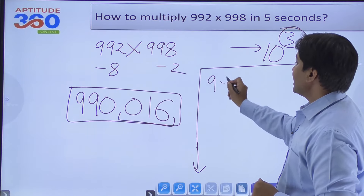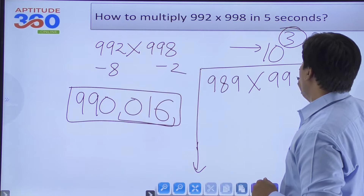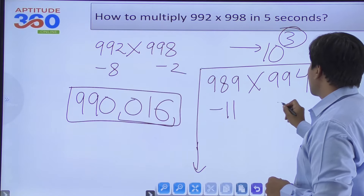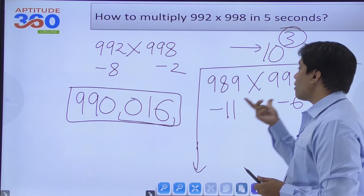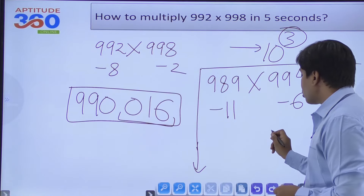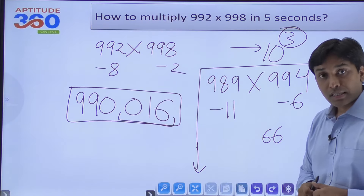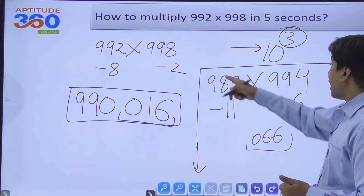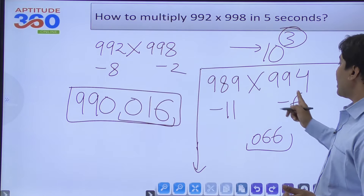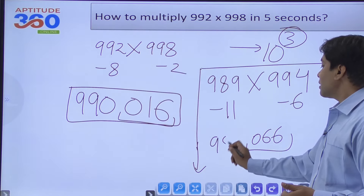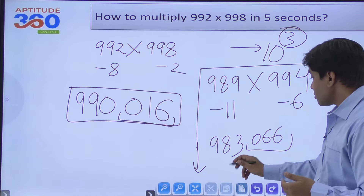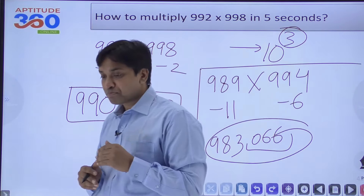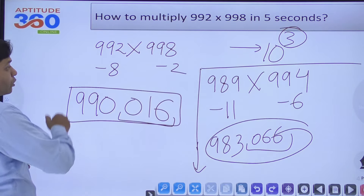For 989×994 with base 1000: 989 is 11 less than 1000, and 994 is 6 less. Multiply excesses: (-11)×(-6)=66. Pad to three digits: 066. Cross addition: 989-6=983 or 994-11=983. Answer: 983066. You can solve this in just a few seconds using this method.